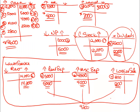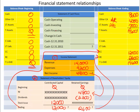We only had one liability: long-term notes payable of $5,000, and no current liabilities. So does $5,000 plus $12,000 plus $2,600 also equal total assets of $19,600? And it does. The balance sheet at the end of the year balances.